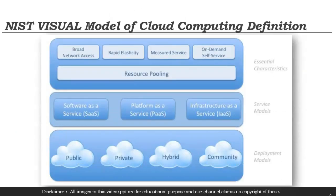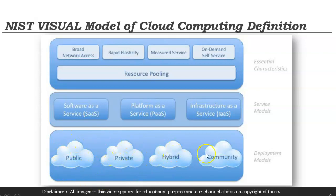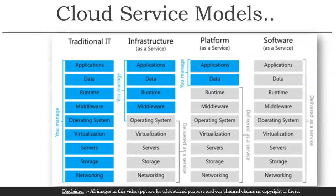Now I'll come to the topic of the day, which is the service model. We have seen in previous videos that there are four deployment models: public, private, hybrid, and community — all rental services. Now when you rent, you also select which type of service you want: software as a service, platform as a service, or infrastructure as a service. We will see the difference between these three service models.